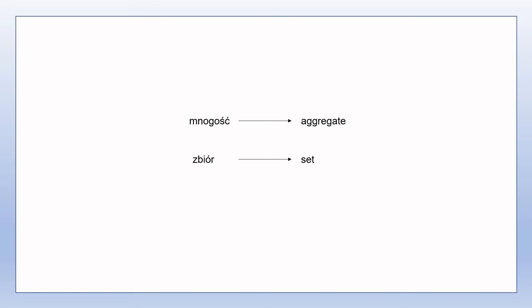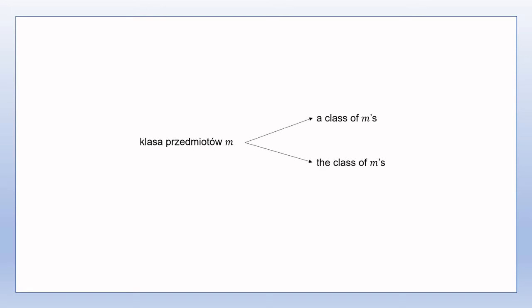Occasionally, it's difficult to determine whether something in Polish should be translated into English using the definite or indefinite article. For example, 'klasa przedmiotów M' can be translated as 'a class of M's' or 'the class of M's'. Usually the context settles the problem of which article to use, but there are a few occasions where I've just had to make a judgment call. It's possible the problem could just be ignored and no article used at all, since the use of articles is arguably logically superfluous, but then this would make the language quite unnatural and distracting.